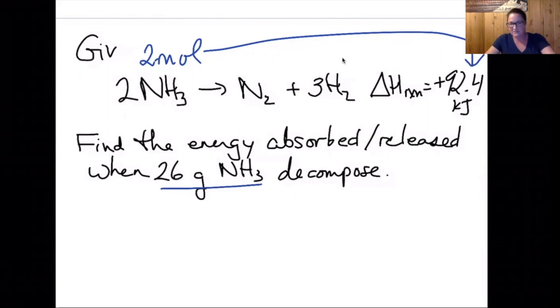Well first I'm going to convert the 26 grams to moles. So using grams equals moles times molecular weight, and NH3 has a molecular weight of 17. 26 divided by 17 tells me that we have 1.52 moles of NH3 reacting.